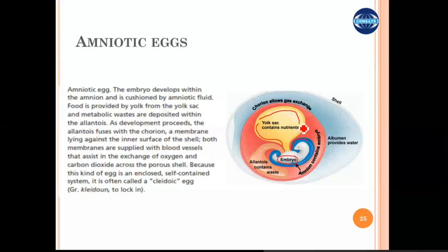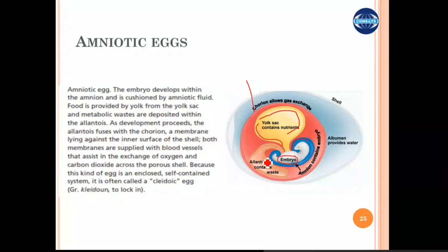Third, there is another membrane-covered structure called the allantois, which serves as storage for the waste materials the embryo is producing metabolically. The entire structure is covered in another membrane called the chorion, which provides respiratory support — it absorbs oxygen and diffuses carbon dioxide in and out through the porous eggshell. Outside this whole developmental structure is albumin, which provides cushioning support. At one point during development, the chorion and allantois fuse together to provide vessels for the most efficient respiration.